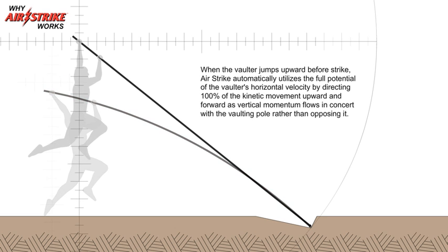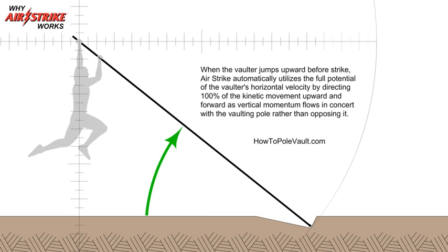When the vaulter jumps upward before strike, airstrike automatically utilizes the full potential of the vaulter's horizontal velocity by directing 100% of the kinetic movement upward and forward, as vertical momentum flows in concert with the vaulting pole rather than opposing it.